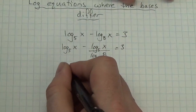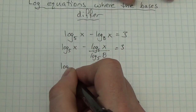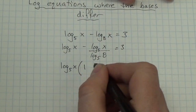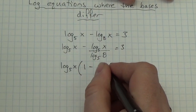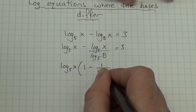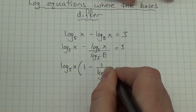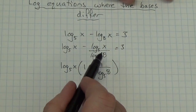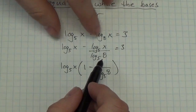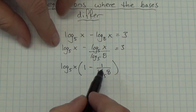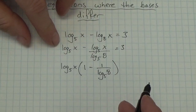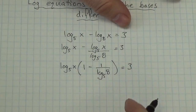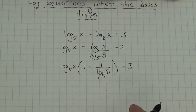So I'm going to factor that out and make this: log base 5 of x multiplied by 1 minus 1 over log base 5 of 8. Because when I factor that log base 5 of x out, the log base 5 of 8 is still in the denominator. And this is going to equal 3.